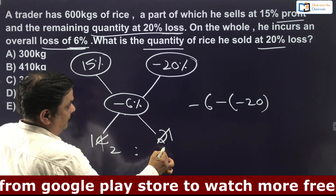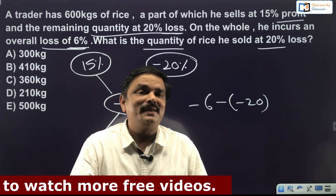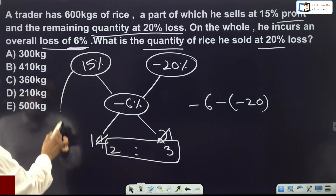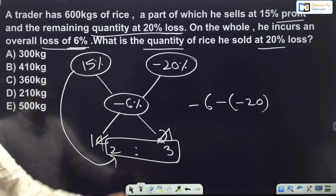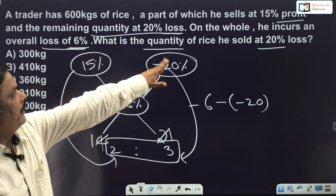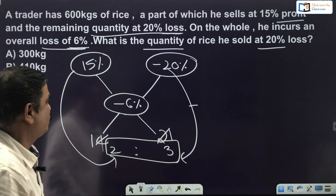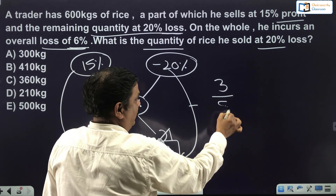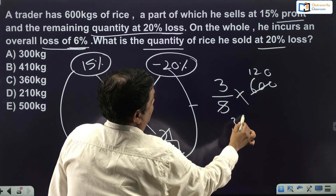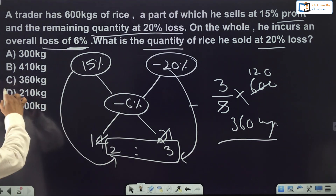The ratio of rice sold at 15% profit to 20% loss is 2:3. Total parts = 5. Quantity sold at 20% loss = (3/5) × 600 = 360 kg. The answer is 360 kg.